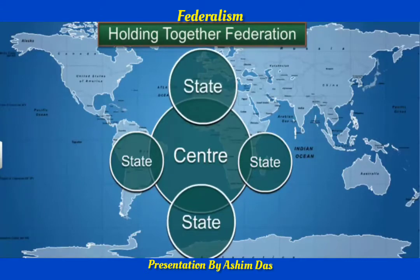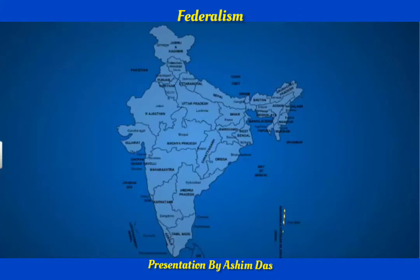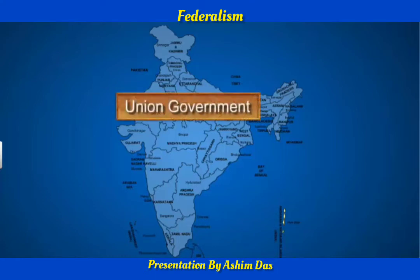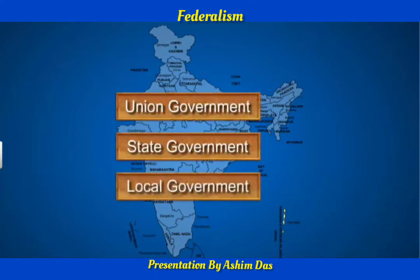For example, Jammu and Kashmir in India has been granted special status. India is a union of states based on the principles of federalism. Our country has a three-tier system of government, namely the union government, state governments, and the local government that consists of gram panchayats and municipalities.